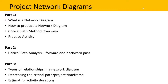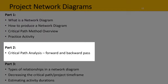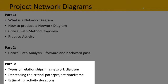This closes out our three-part series on network diagrams and the critical path. In part one, we learnt what a network diagram is and how to produce one, and learnt about the critical path method with a practice activity. In part two, we learnt how to do the forward and backward pass in a network diagram with a practice activity. And in this video, part three, we examined different types of relationships in a network diagram, including how to decrease the critical path and the importance of estimating activity durations correctly. There's a separate video available on project estimation techniques.